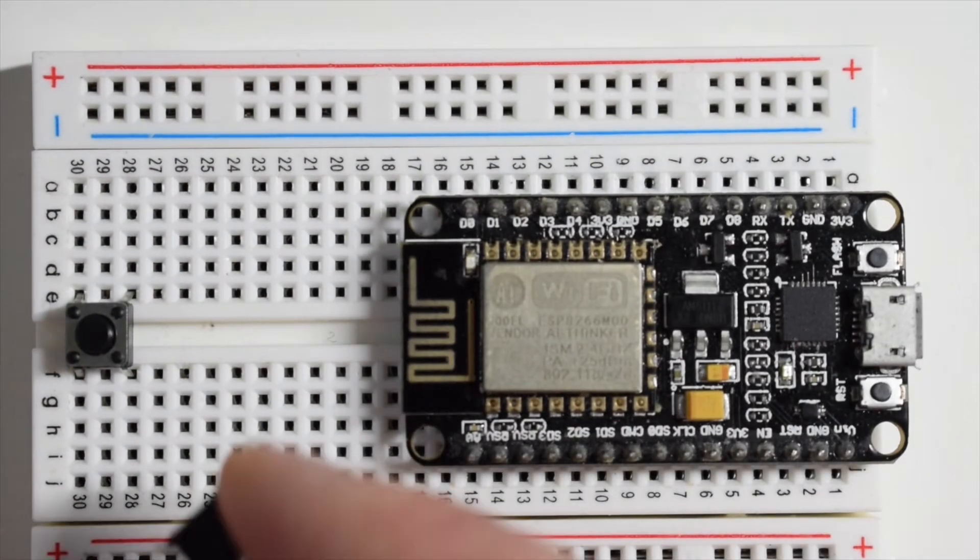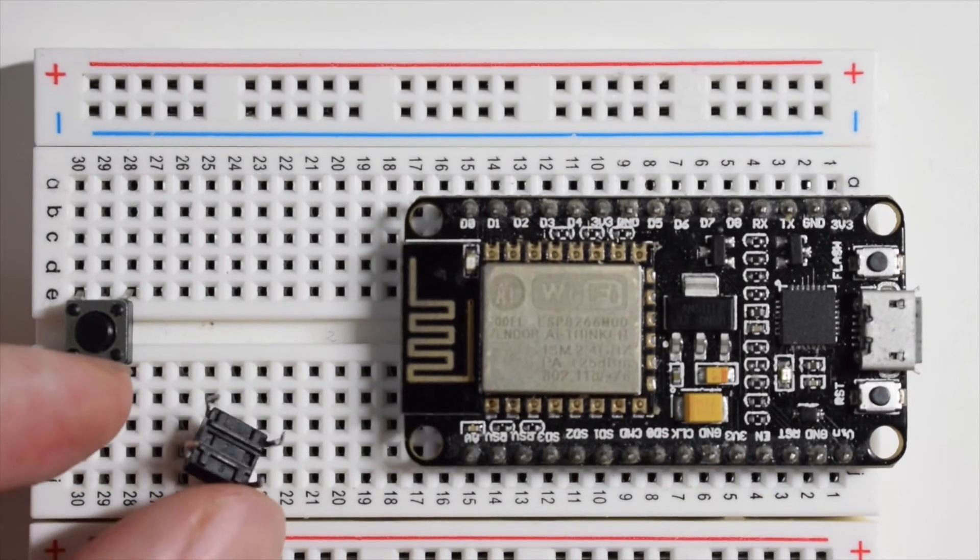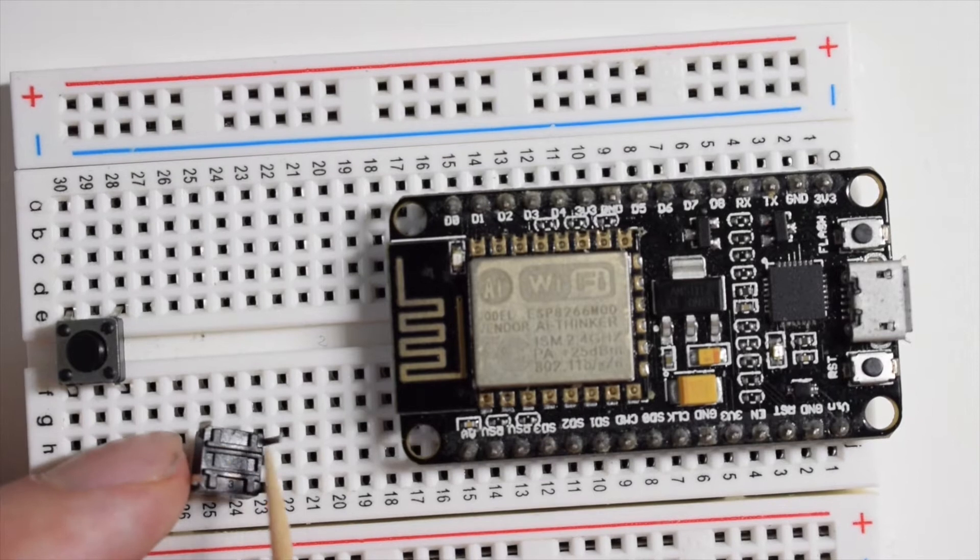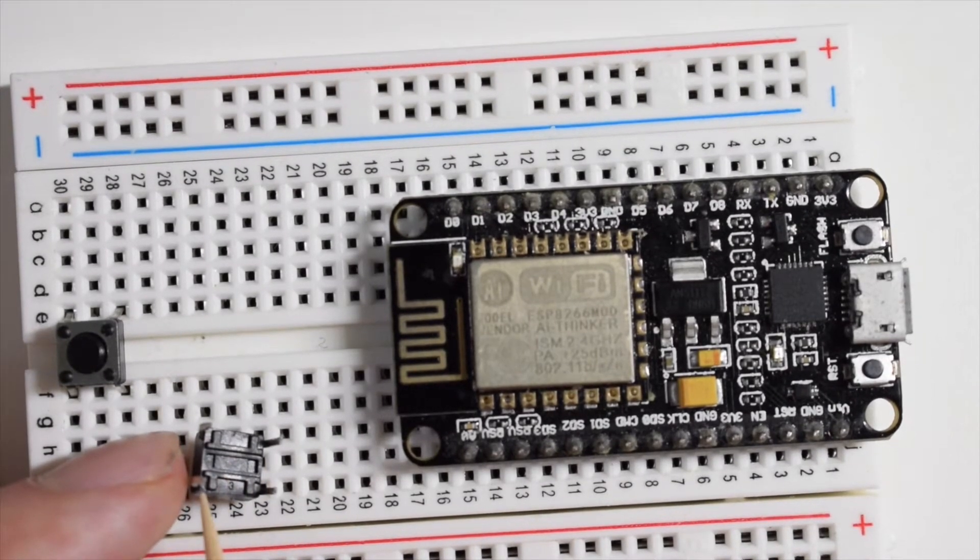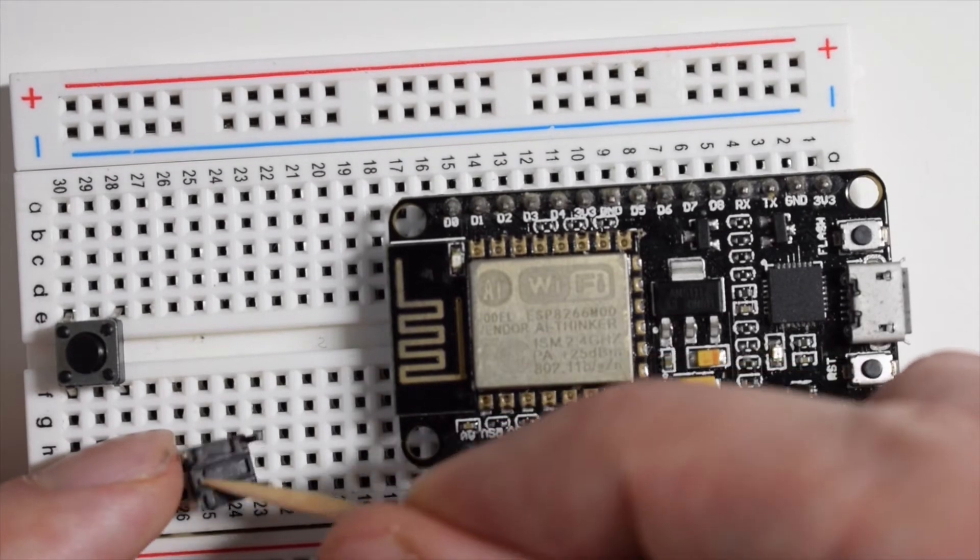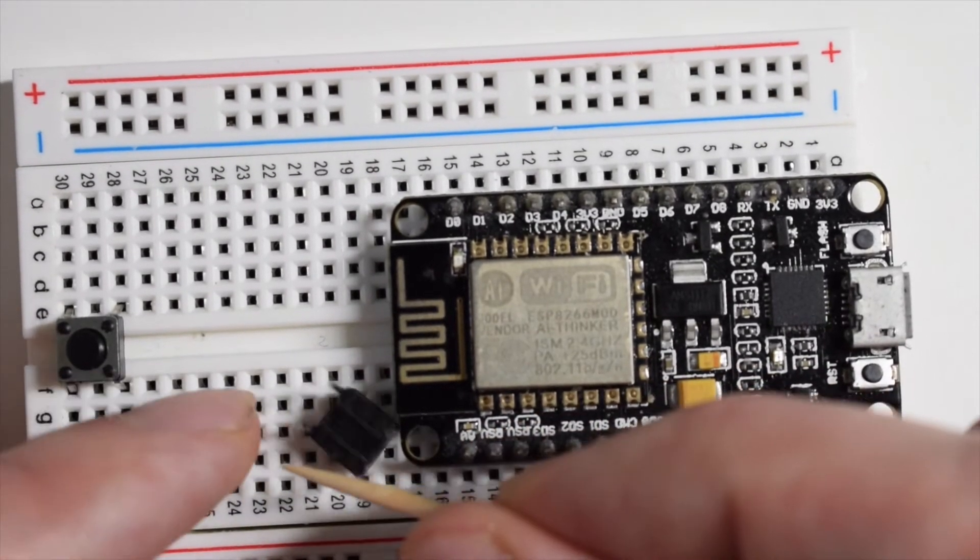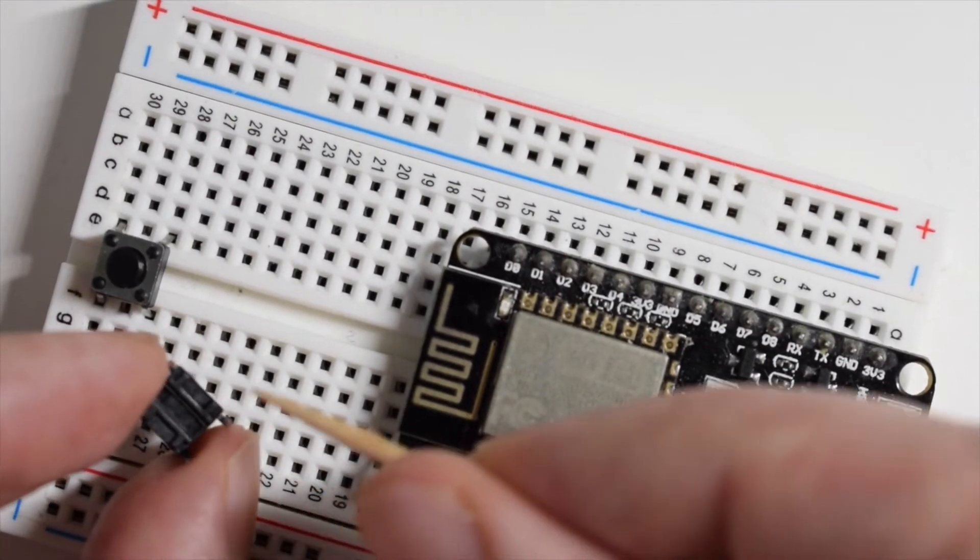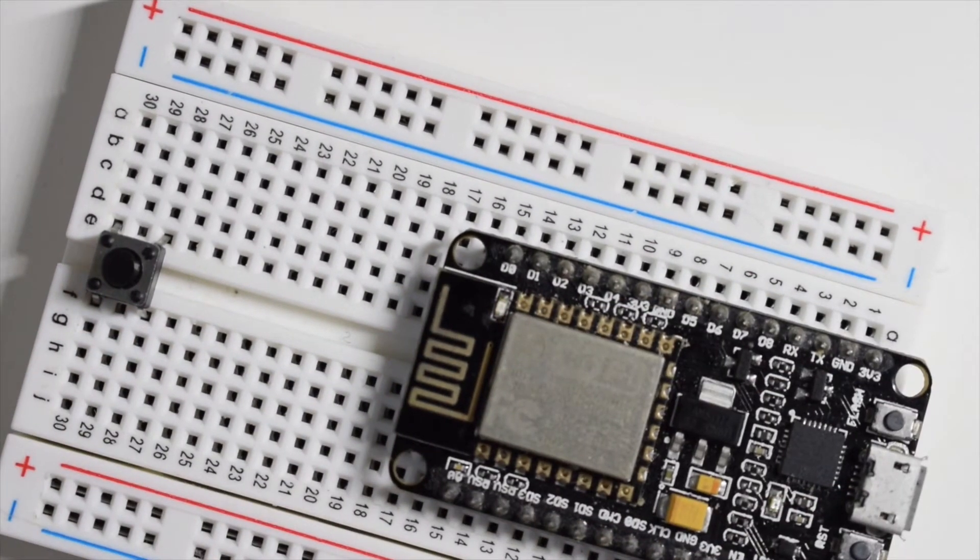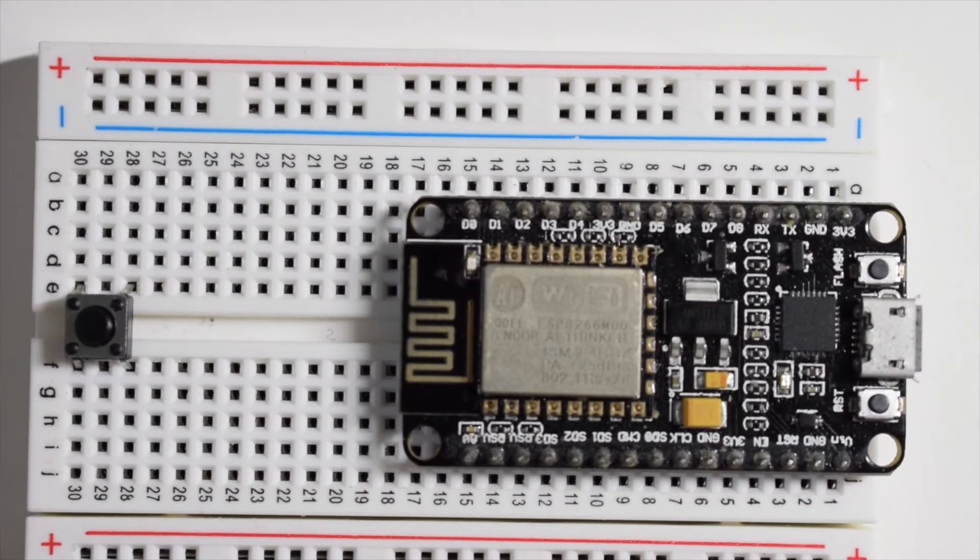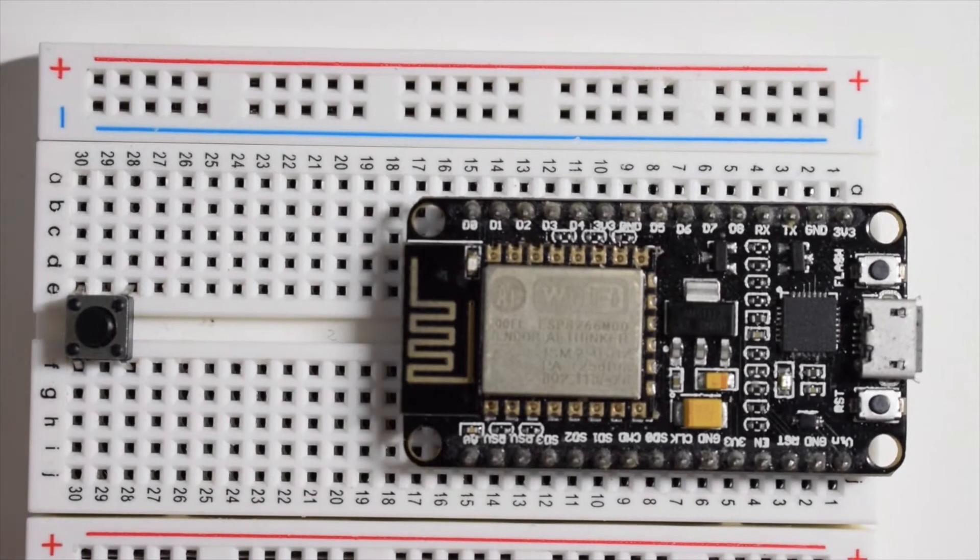I have another button here. I'm just gonna put it the other way around. And you can see there are two lines here. That means these sides are connected. But these sides are only connected when the button is pressed. So, I'm gonna attach wires and demonstrate.